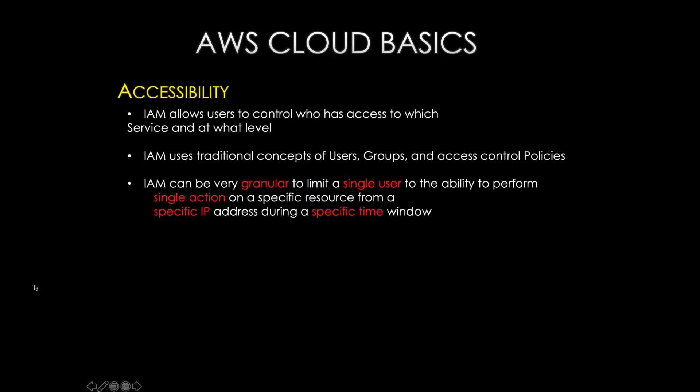Let's jump into accessibility. IAM allows users to control who has access to which services and at what level. When you log into Amazon as a root account, you can see a lot of services available at your disposal — for example, EC2 instances that you can start and stop. We'll cover EC2 in a third session in about two weeks, covering Windows and Linux environments including Ubuntu and Red Hat. IAM is all about how you actually give access to others — that is the accessibility, IAM roles, feature set, and policies within AWS.